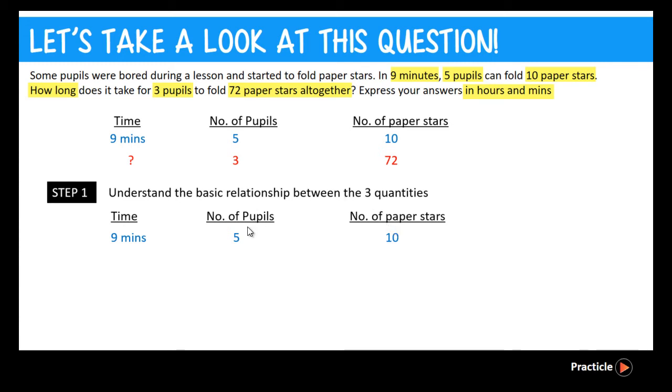Because if you have fewer pupils, you have fewer hands, so fewer paper stars. So now we know that the number of pupils and the number of paper stars that are folded actually moves in the same direction, correct?